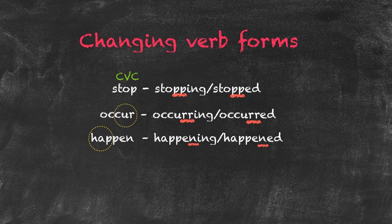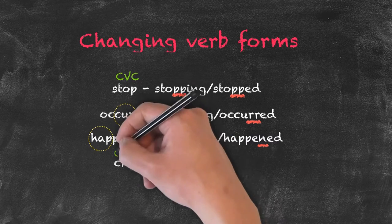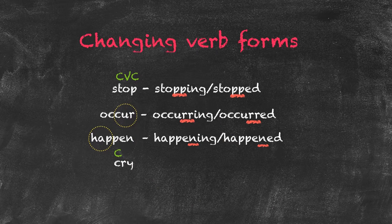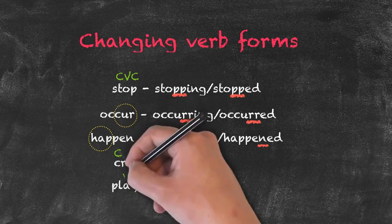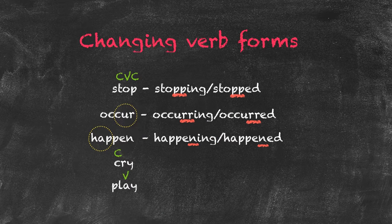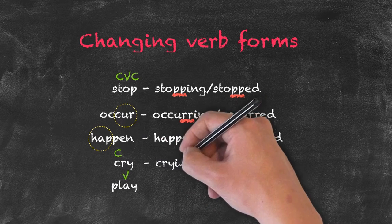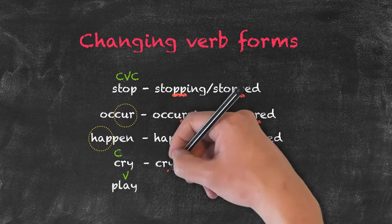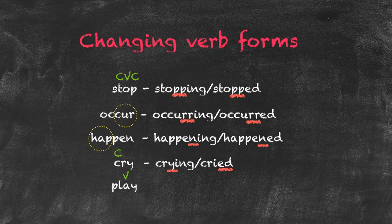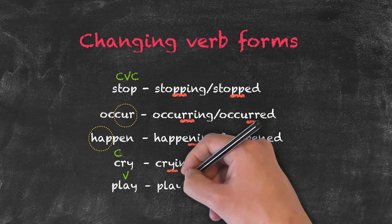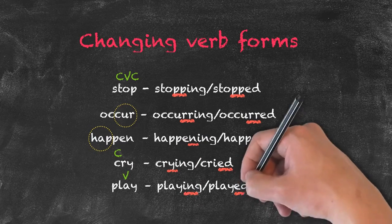Now, for one-syllable verbs that end in Y: when there is a consonant before the Y, as in CRY, we add ING to get 'crying,' but we drop the Y and add IED to get 'cried.' However, when there is a vowel before the final Y, as in PLAY, we need not do anything special — we only add ING or ED.